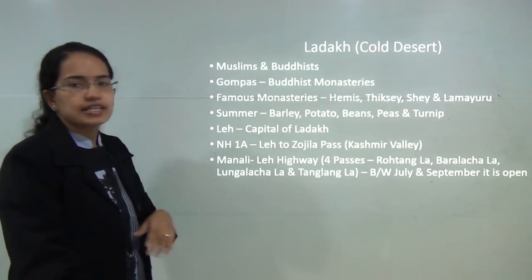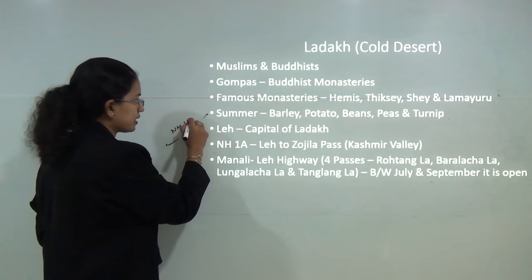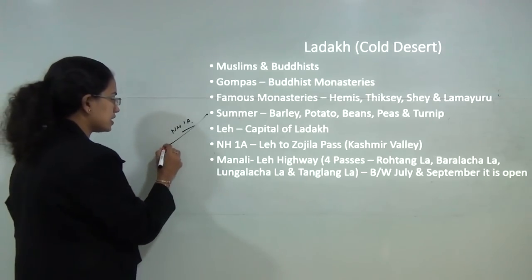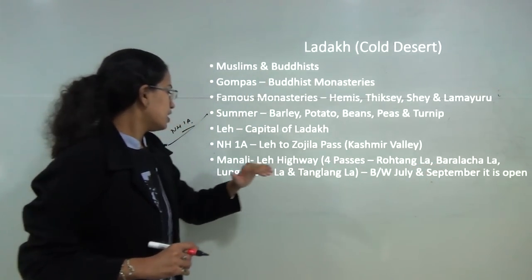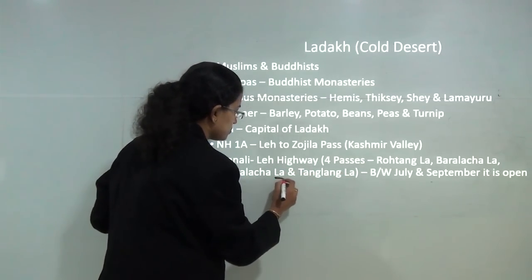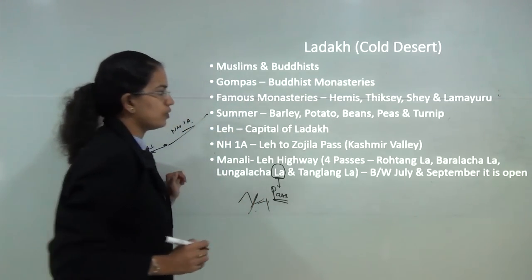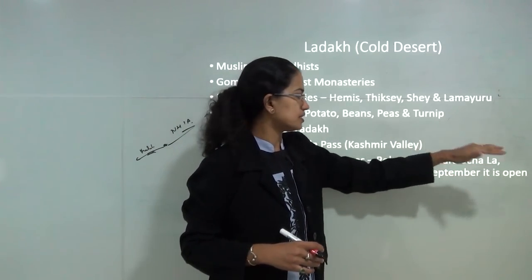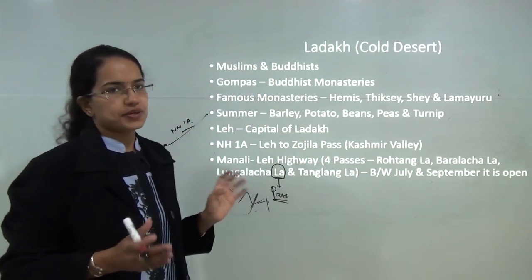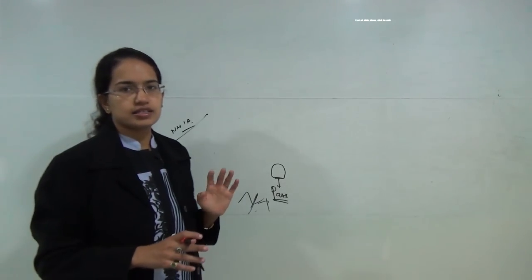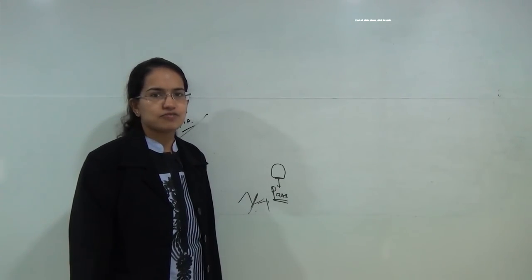National Highway 1A runs from Leh to Zoji La in the Kashmir valley. Another important highway runs from Leh to Manali and has four passes in between: Rohtang Pass, Baralacha La, Lungalacha La and Tanglang La. The word 'la' means a pass — a way through the mountains. All of these passes are open between July and September and are closed during the winter months. With this we complete the series for NCERT Class 7 Geography. We will next be starting with NCERT Class 8 Geography. Please subscribe to our channel for more updates.